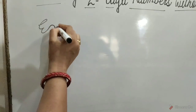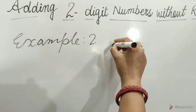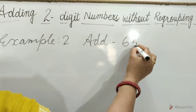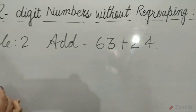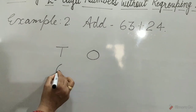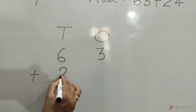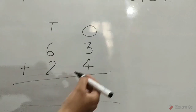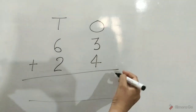Example 2: add 63 plus 24. Write tens and ones: 6 tens, 3 ones for 63, plus 2 tens, 4 ones for 24. Children, we add ones first. 4 ones plus 3 ones is equal to 7.